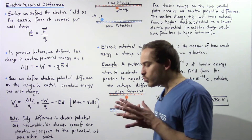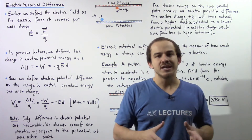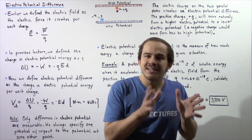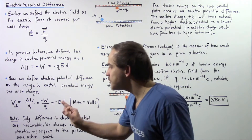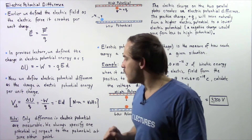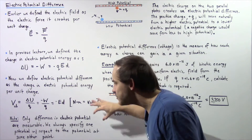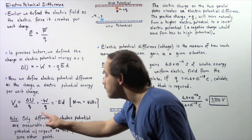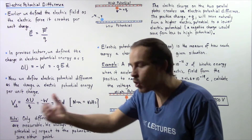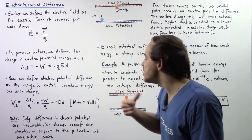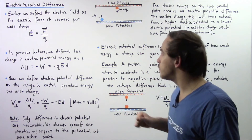In the same way that only a difference in potential energy is measurable, only a difference in voltage is measurable — that's why we discuss voltage difference and not simply voltage. Only differences in electric potential or voltage are measurable. We always specify one electric potential, one voltage, with respect to another electric potential at some other point.